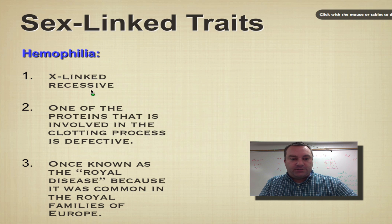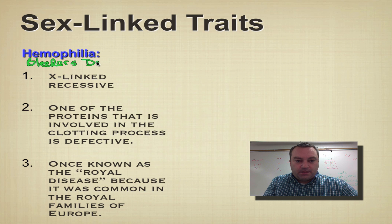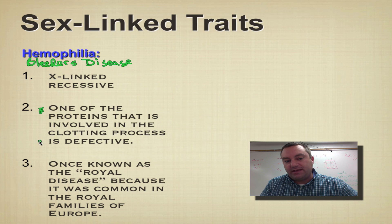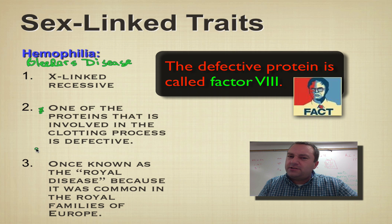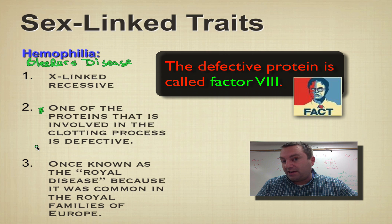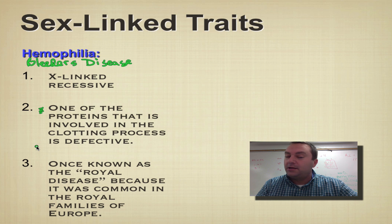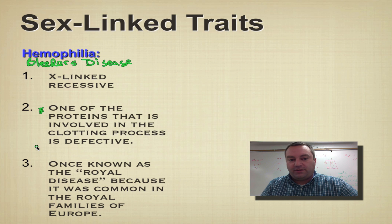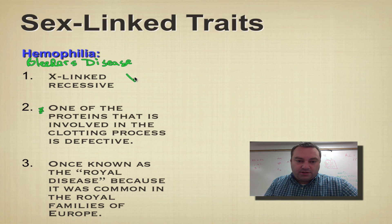Hemophilia is known as the bleeder's disease. One of the proteins involved in the clotting process doesn't work, so the blood has a hard time clotting. Paper cuts bleed for a long time, they're very prone to bruising, and any real cut is really going to bleed. The biggest problem is that harsh movement and bumping can cause internal bleeding, and that's what really affects hemophiliacs. This is X-linked recessive. An X with a superscript capital H is normal and dominant, and an X with a lowercase h superscript is the hemophilia allele.